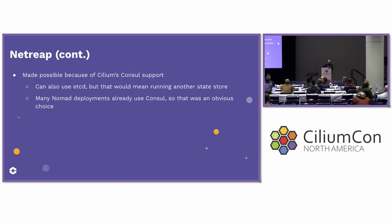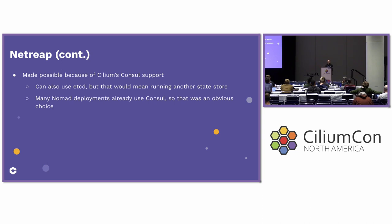A lot of this is made possible through Cilium's Consul support via the KVStore abstraction. We can also use etcd, but we chose not to because we didn't want to run yet another state store. We're already running Consul, and many other Nomad deployments typically use Consul because that's how it was originally intended. Nowadays you can run Nomad standalone without that requirement, but since most people use it, we felt it was fine to take the dependency. It is used for storing Cilium's state and also distributing the policies.